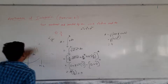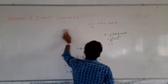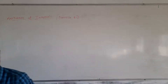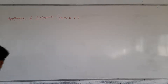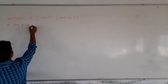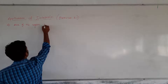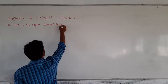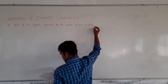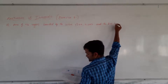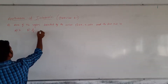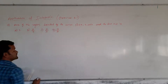This is about problem number 12. Now we will take the last question in the exercise, that is problem number 13. Problem number 13 is: area of the region bounded by the curve y² = 4x, the y-axis, and the line y = 3. Option A: 2. Option B: 9/4. Option C: 9/3. Option D: 9/2.